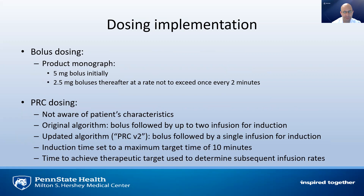The bolus dosing technique follows the product monograph: 5 milligrams initially, then 2.5 milligrams thereafter at a rate not to exceed once every two minutes. For PRC dosing, the algorithm would not be aware of the patient characteristics. The original algorithm uses a bolus followed by one or two infusions for induction, while the updated algorithm uses only a bolus with a single infusion. The induction time was set to a maximum of 10 minutes, and the time to achieve the therapeutic target would then determine the infusion rates following the induction period.